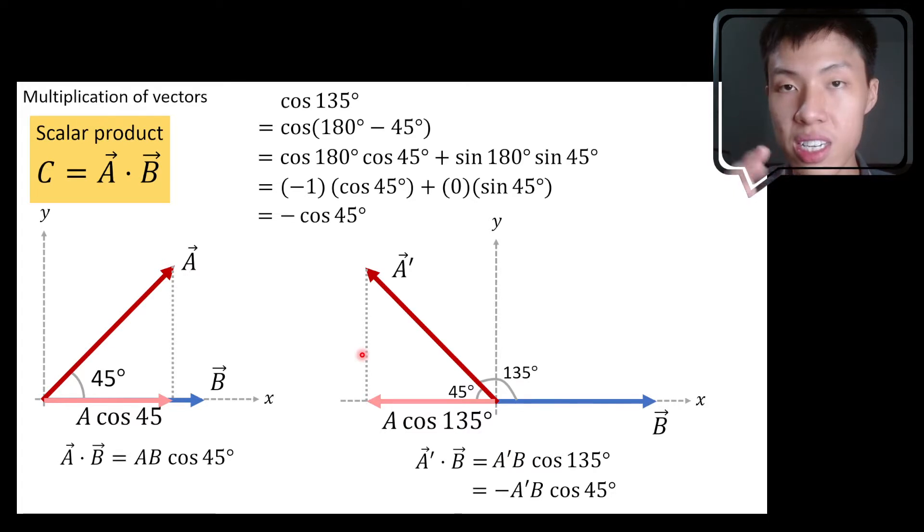As you can see here, the characteristics here is the component of A which is parallel to B. It's in the opposite direction to B.